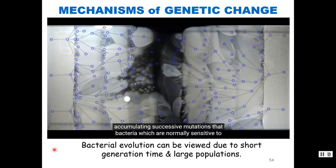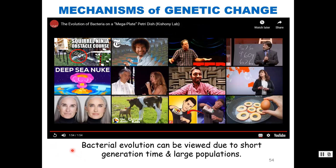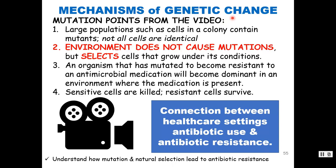By accumulating successive mutations, bacteria normally sensitive to an antibiotic can evolve resistance to extremely high concentrations in a short period of time. We can watch this because of their short generation time — E. coli doubles every 20 minutes — and because you're looking at trillions and trillions of bacteria on that petri dish.